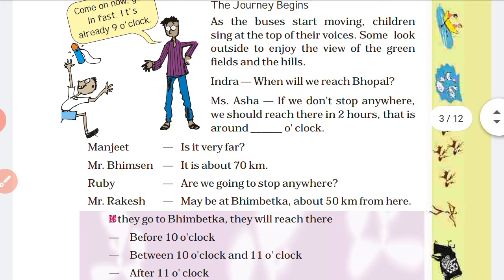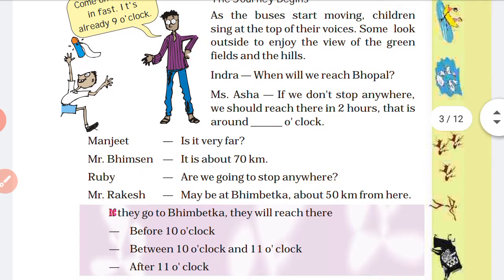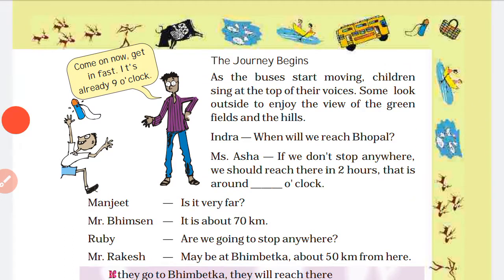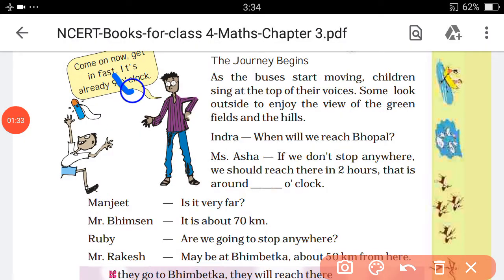Indra asks, 'When will we reach Bhopal?' That is the question. Asha says, 'If we do not stop anywhere, we should reach there in 2 hours.' That is a question for us — we need to find the arrival time. We will take the starting time and add 2 hours to get the calculation.